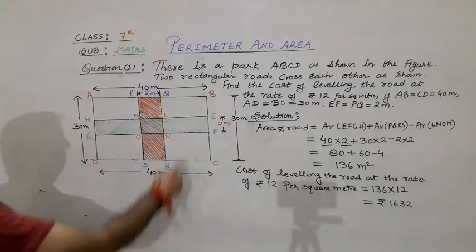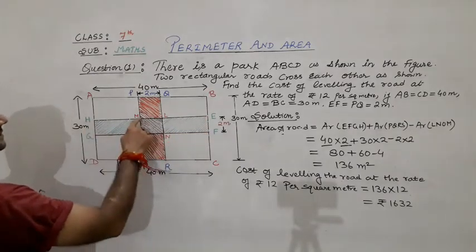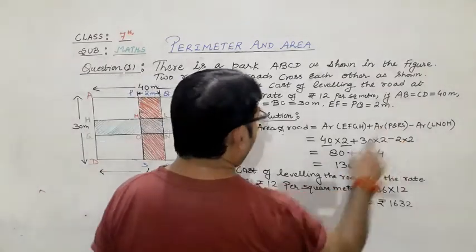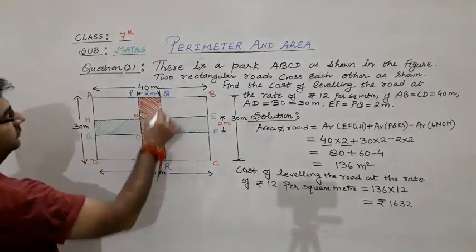While calculating this area of EFGH, this MLNO is included. Now we will calculate the area of PQRS, that is the road along the breadth of this rectangular path.